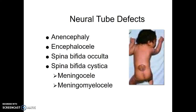This is Chapter 30, Neuromuscular Dysfunction, Part 2, and we're on Neural Tube Defects. On my exam, I'm only going to ask you about spina bifida, but we'll also quickly talk about anencephaly and encephalocele.